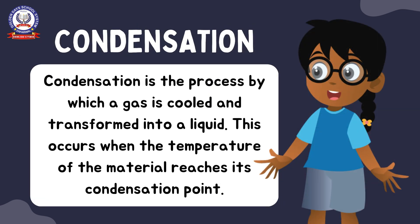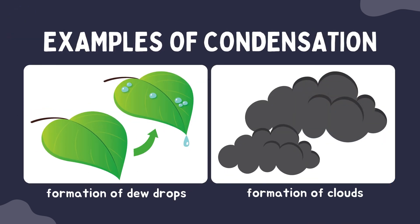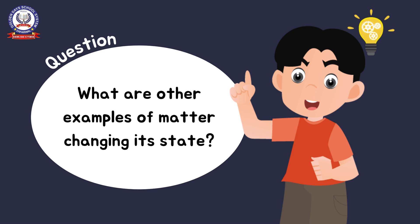Condensation is the process by which a gas is cooled and transformed into a liquid. This occurs when the temperature of the material reaches its condensation point. Examples of condensation include the formation of dew drops and the formation of clouds. What are other examples of matter changing its state?